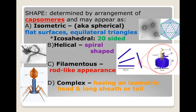Another shape is helical, which is more spiral-shaped — it almost looks rod-like in appearance. The capsomeres wind around the nucleic acid in the helical type. The filamentous type is the rod-shaped one; it does not wind around the nucleic acid the way the helical type does.